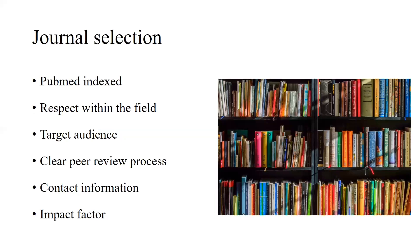What should you be looking for when comparing journals? You find a list of journals, ask your friends and mentors, and now you're down to, say, 10 journals. How can you compare them? First, make sure that the journal is PubMed indexed, which means when your article is published, it will go on PubMed.